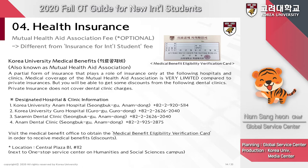Keep in mind that the mutual health aid association fee is optional and is different from the insurance for international student fee. If you pay the mutual health aid association fee, you will be able to receive medical benefits or discounts at the two designated dental clinics shown on this slide. If you paid this fee when you paid your tuition, you can follow the instructions listed here to get your medical benefits eligibility verification card and show it at the designated dental clinic to receive a discount on your treatment.